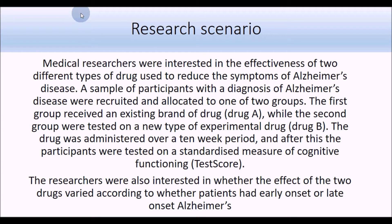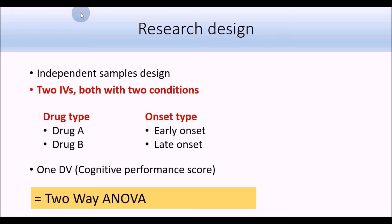They wanted to look at the effects of drug, but in addition, they wanted to look at whether each of these drugs were more or less effective depending on whether patients had early onset or late onset Alzheimer's. The design is still an independent samples design, but now we've got two independent variables: drug type - whether they took drug A or drug B - and onset type - whether they were early or late onset Alzheimer's. The one dependent variable was performance on the cognitive test, so this is suitable for a two-way ANOVA.